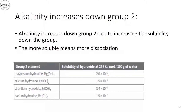The reason alkalinity increases down the group is that solubility increases — from around 10⁻⁵ to 10⁻³ and then 10⁻². Greater solubility means greater dissociation, which results in a more alkaline solution.